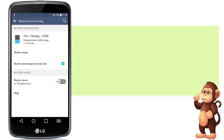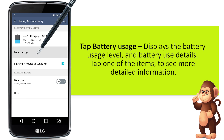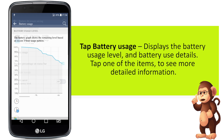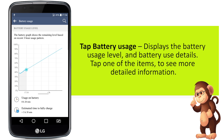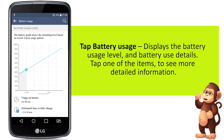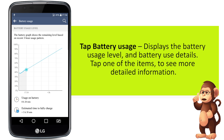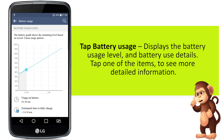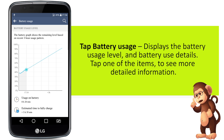Tap battery usage. This displays the battery usage level and battery use details. Tap one of the items to see more detailed information.